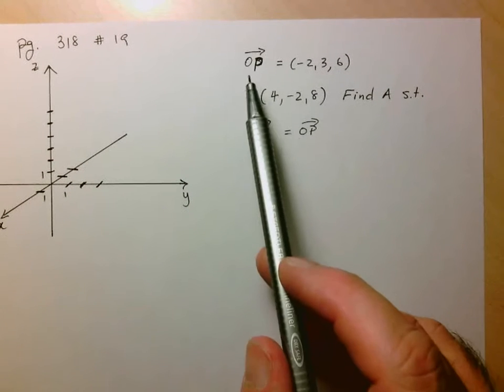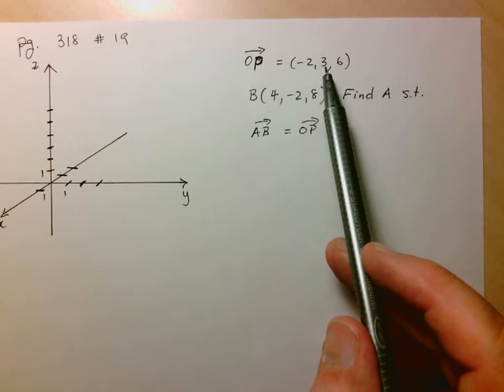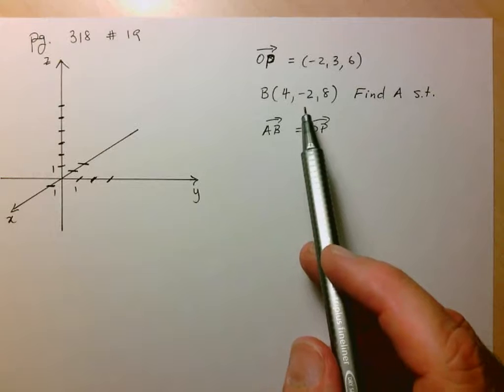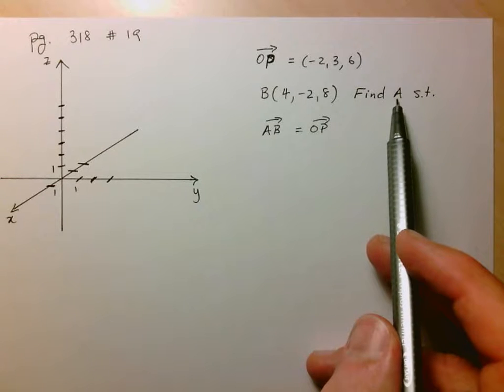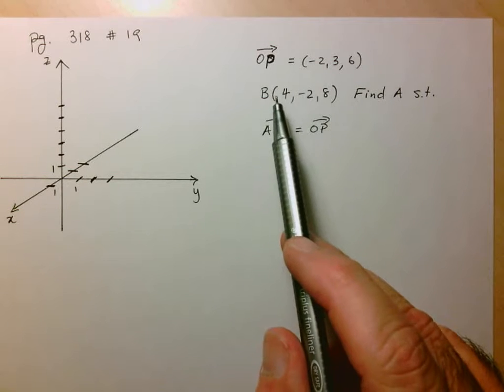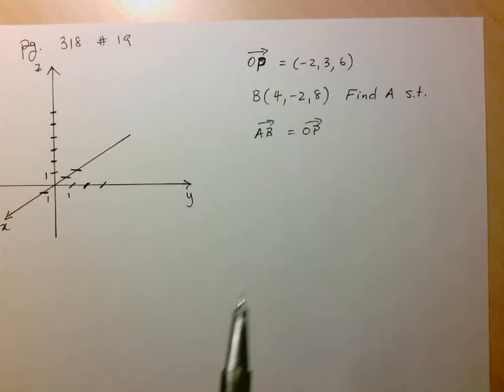It gives us this vector here that goes from the origin to the point P, which is given by negative 2, 3, 6. Okay, then it gives us a point B, and I want to find a second point A such that the vector from A to B is equal to the vector from the origin to point P.